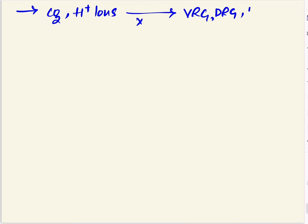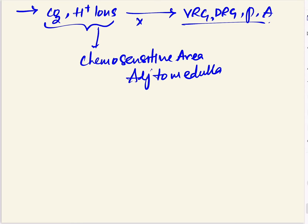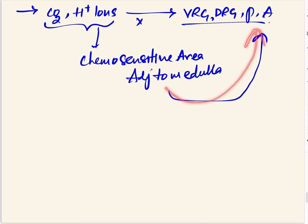Changes in carbon dioxide and hydrogen ion will not affect the respiratory centers directly. Instead, they will affect a chemo-sensitive area adjacent to the medulla, which in turn excites the receptors present in the medulla region. So carbon dioxide and hydrogen ions first stimulate the chemo-sensitive area, which then regulates the respiratory centers.